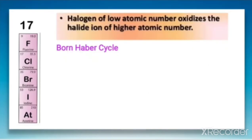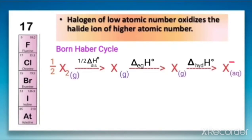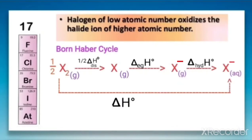This can be explained through the Born-Haber cycle. This process takes place in three steps. In the first step, the enthalpy change is the bond dissociation enthalpy. In the second step, the acceptance of an electron — the electron gain enthalpy. According to the Born-Haber cycle, the overall enthalpy change delta H0 equals the sum of the dissociation enthalpy, electron gain enthalpy, and hydration enthalpy.